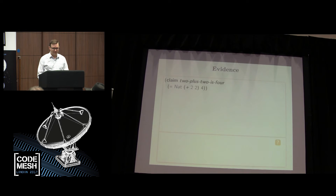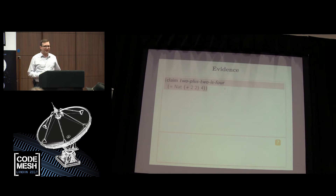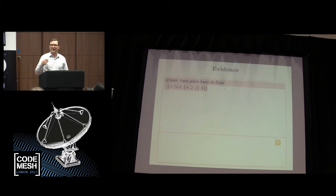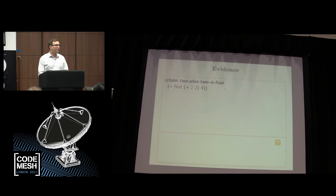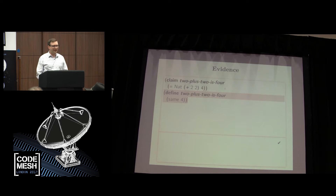We've defined addition. But types are much more than things like atoms, pairs, nats, and functions. Types can also represent statements, and then the programs classified by that type are evidence that the statement is actually true — it's the computer version of those mental constructions that Brouwer was talking about. In order to provide evidence that two plus two equals four, I use another kind of program called 'same'. The reason they are equal is that they are the same. So I can say 'same four', and because two plus two, four, and four are all the same nat, this is suitable evidence that they are equal.